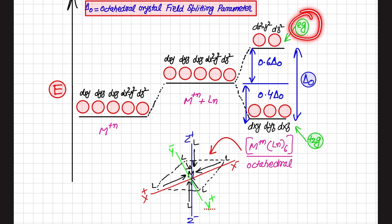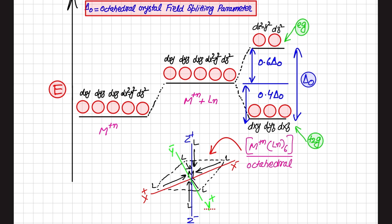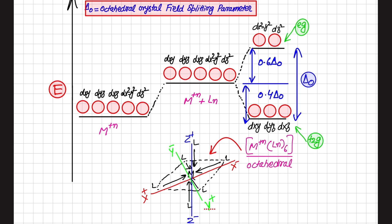The dx²-y² and dz² orbitals are called doubly degenerate orbitals and are represented by eg, while the dxy, dyz, and dxz orbitals are called triply degenerate orbitals and are represented by t2g. Importantly, eg is not an abbreviation for 'equally degenerate' and t2g is not an abbreviation for 'triply degenerate' — these are group theoretical terms.